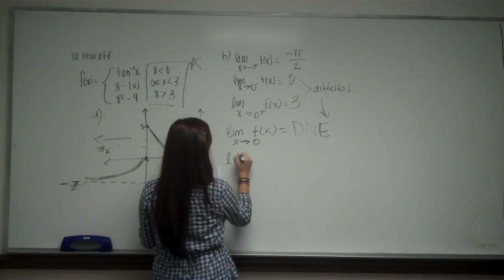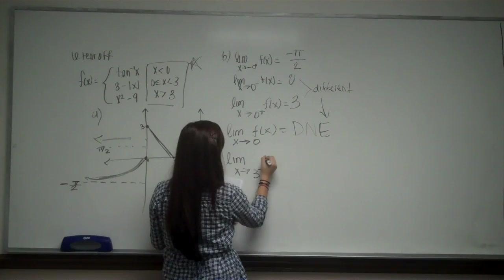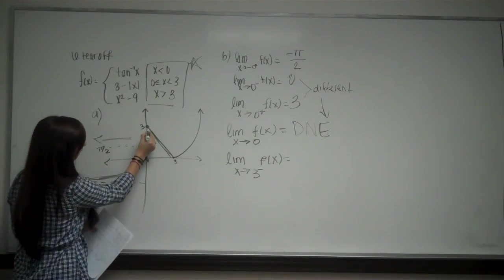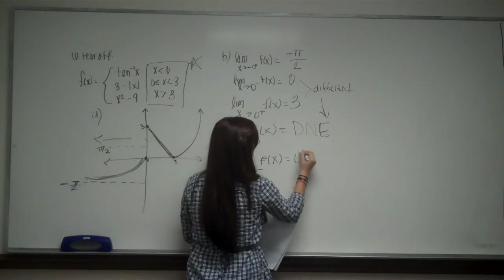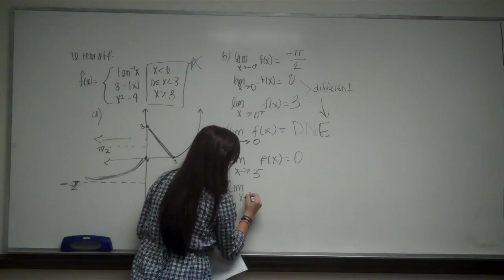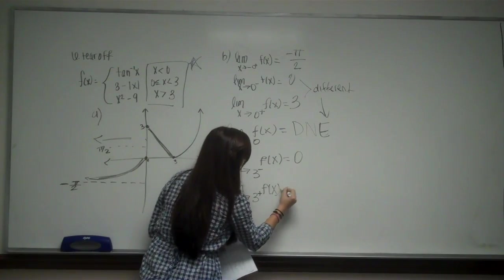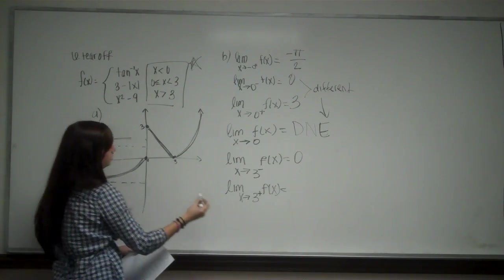So then we have the limit as x approaches 3 from the left of f of x. So as it approaches 3 from the left, I'm using this graph and then we go down to 0. And then it wants the limit as x approaches 3 from the right. And that's this graph. As I come down, I approach 0.